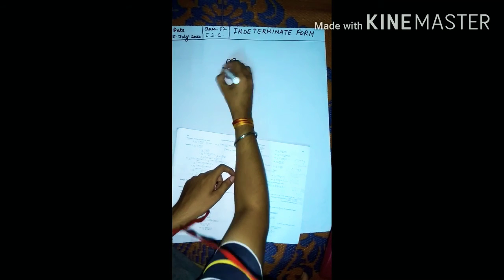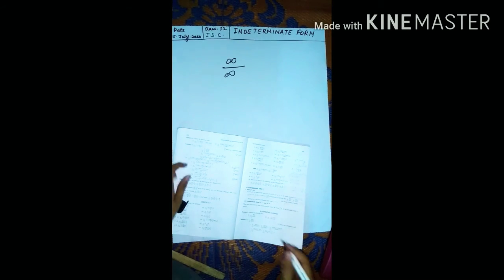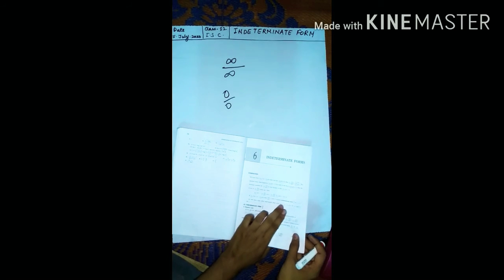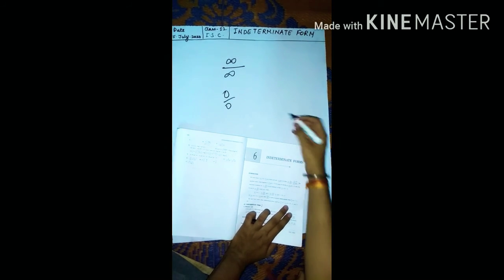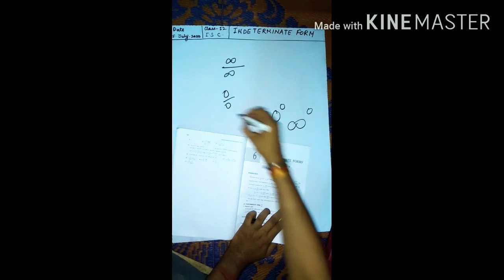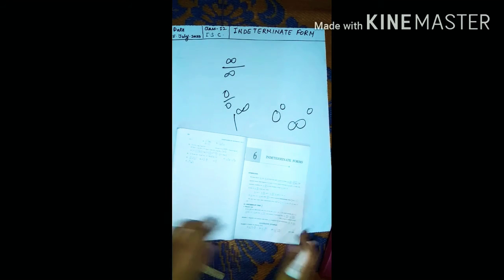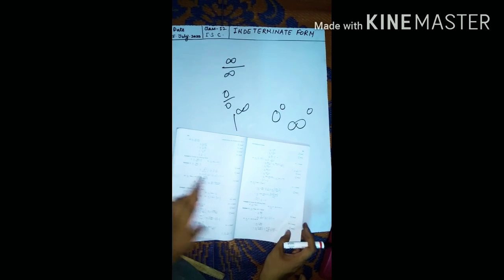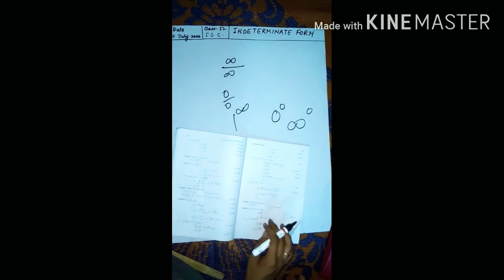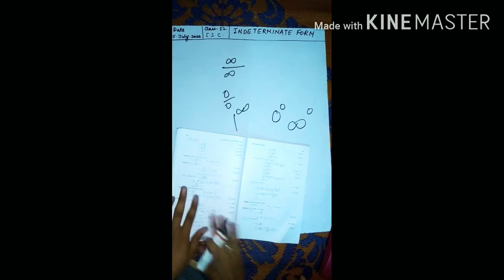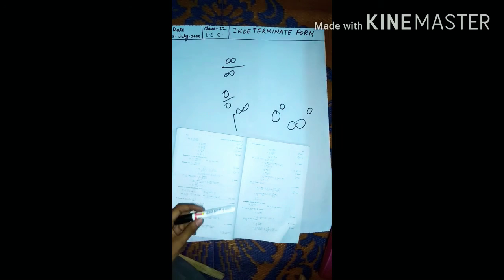We are now heading to the next indeterminate form: infinite upon infinite. Just as you can have 0 by 0 form, you can also have infinite upon infinite. And there are more indeterminate forms such as 0 to the power 0, infinite to the power 0, and 1 to the power infinite. We will deal with these forms in limits using L'Hôpital's rule, differentiating numerator and denominator.